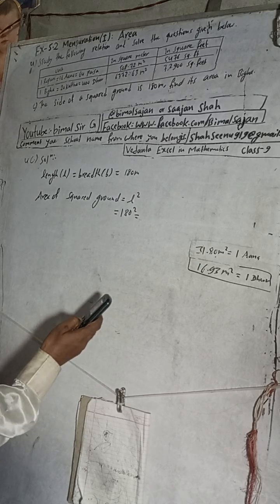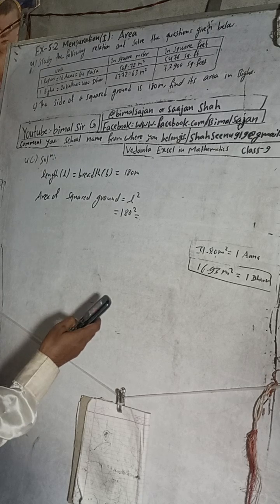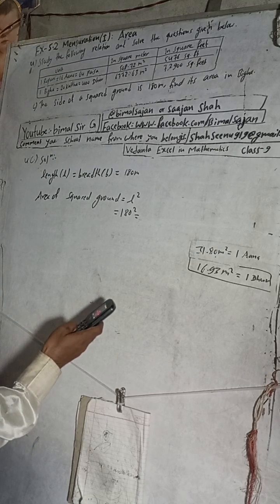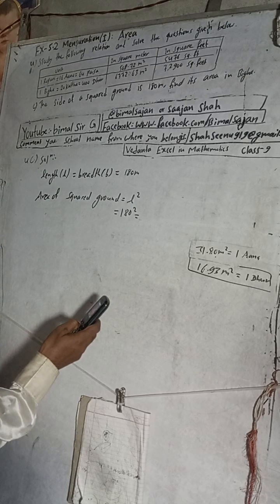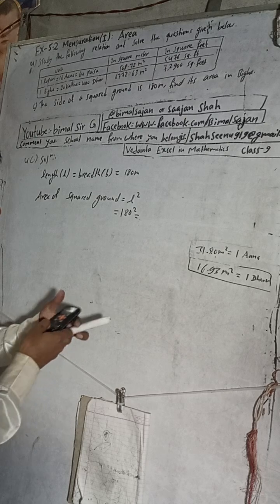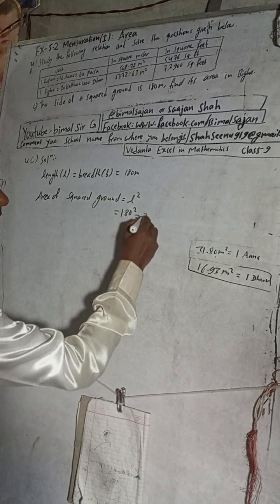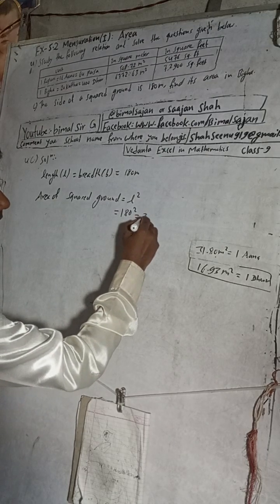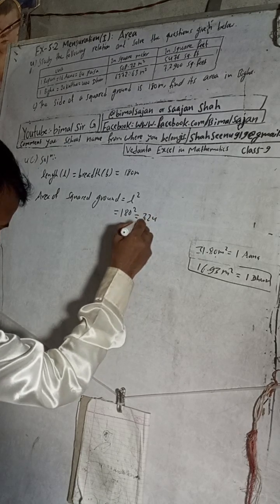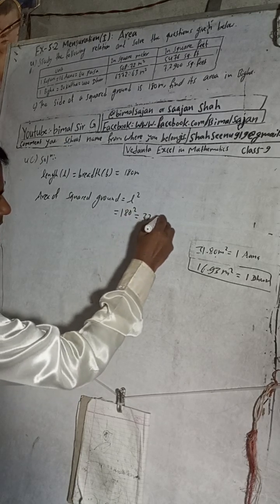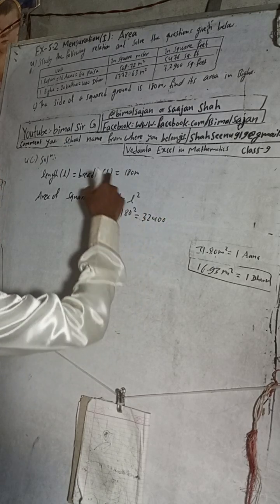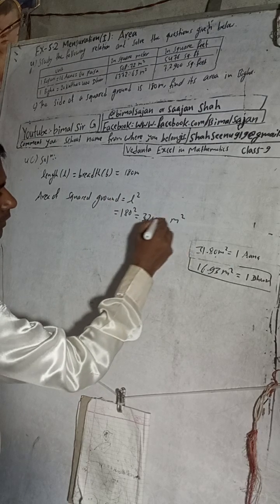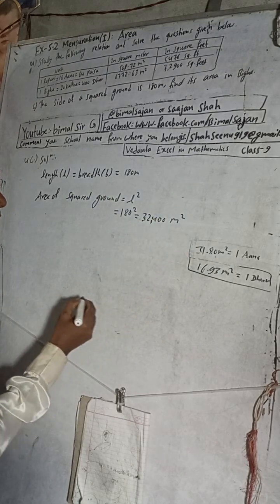180 into 180. Calculating that gives us 32,400 meter square.